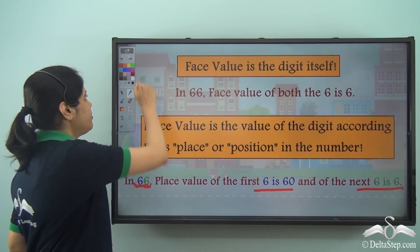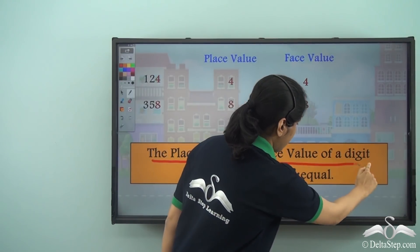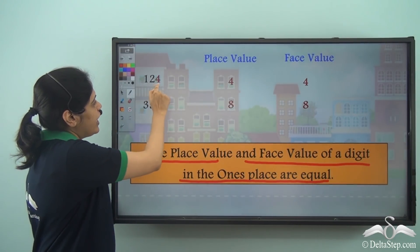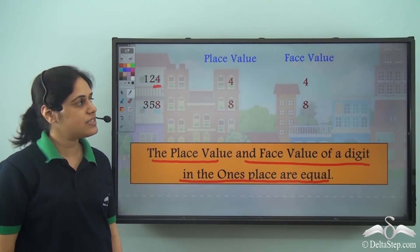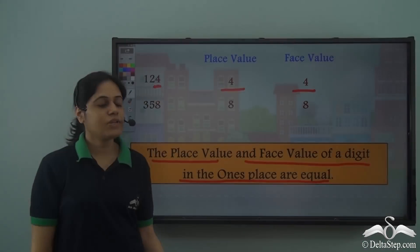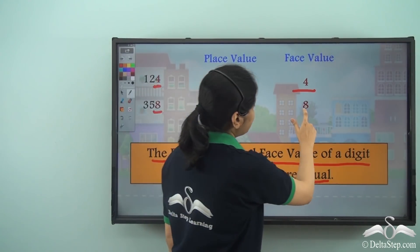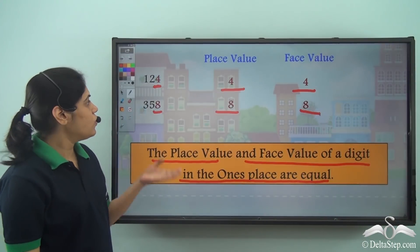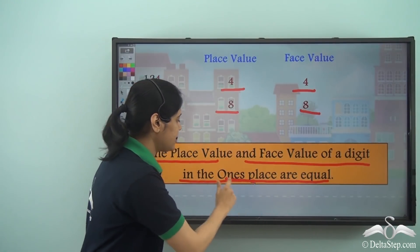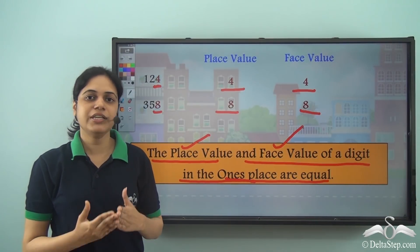There is another important point: the place value and face value of a digit in the ones place are equal. So in 124, I have 4 in the ones place. Its place value is 4 and face value is also 4. In 358, I have 8 in the ones place, with place value 8 and face value 8. So if a digit is in the ones place, the place value and face value are the same, which is the digit itself.